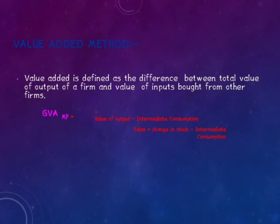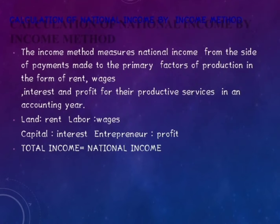...minus intermediate consumption, plus change in stock, minus intermediate consumption. The Income Method measures National Income from the side of payments made to primary factors of production in the form of rent, wages...